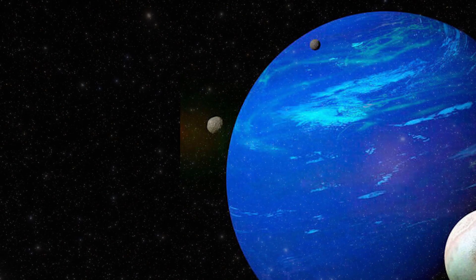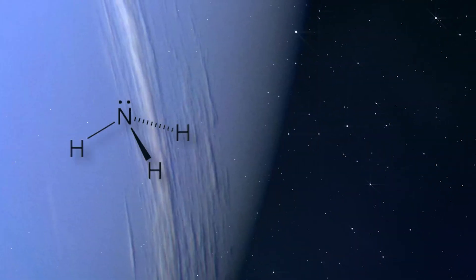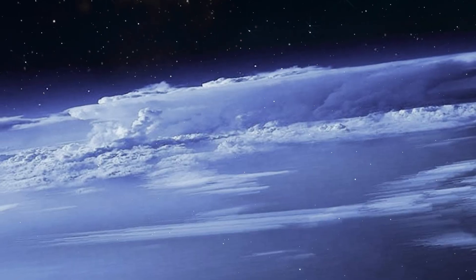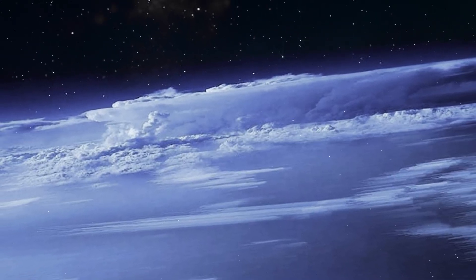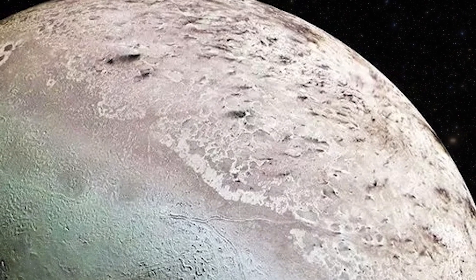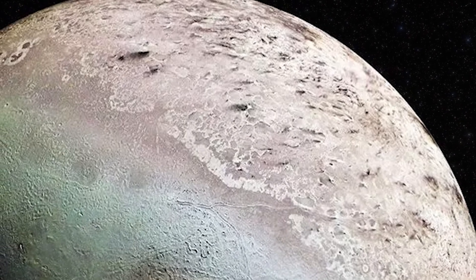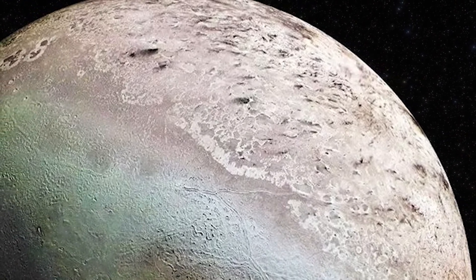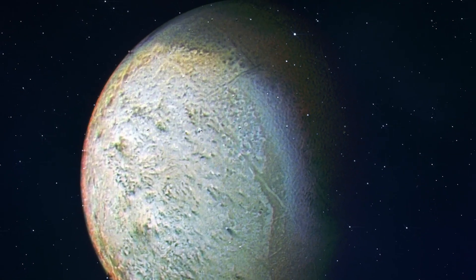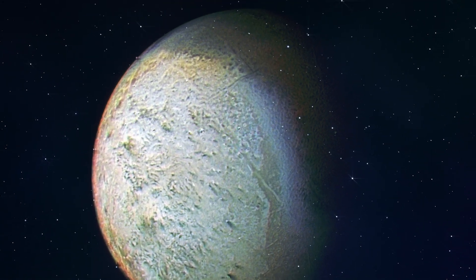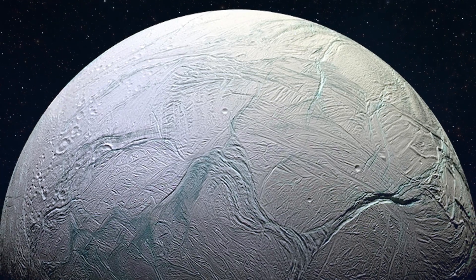Despite Triton's frigid temperatures, scientists believe that it may retain an abundance of ammonia beneath its surface, slowing down the freezing of water. Furthermore, Triton likely possesses a thin nitrogen atmosphere formed by solar heating. However, it is still too early to determine if life could potentially thrive on Triton, similar to the potential for life on Enceladus.